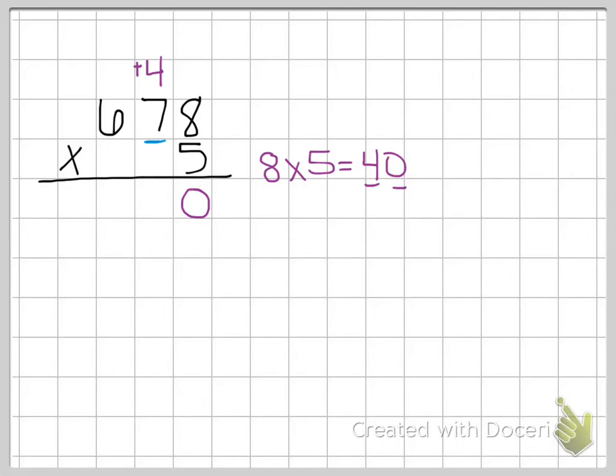The second step is to do our number in the tens place times the digit on the bottom. So 70 times 5 or 7 times 5. 7 times 5 is 35. And then we need to add 4, the 4 that we carried. 35 plus 4 is 39. So our 9 comes down and we're going to carry our 3. And I'm going to put that plus sign.